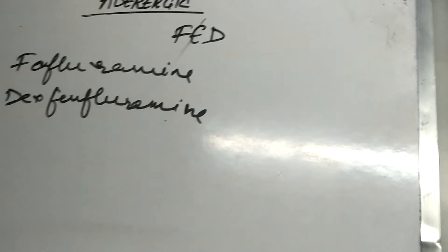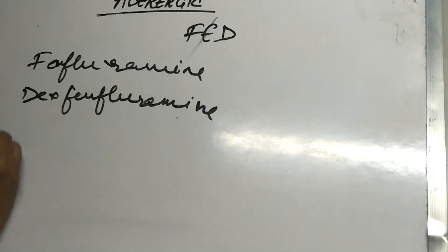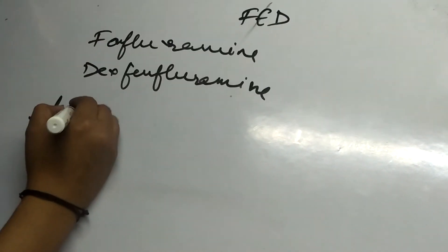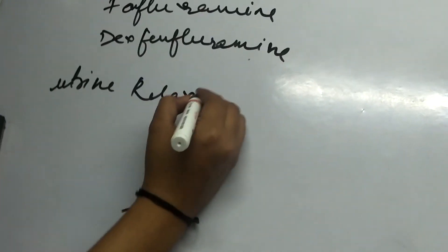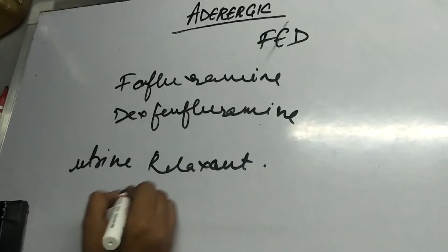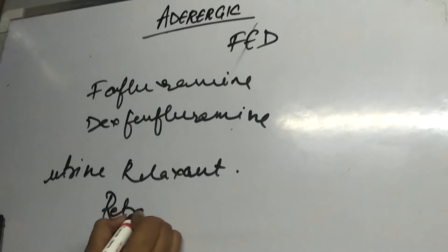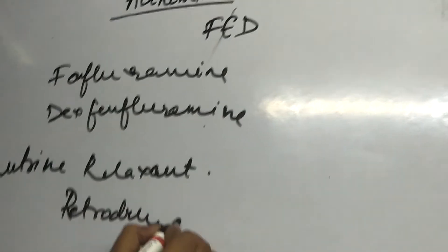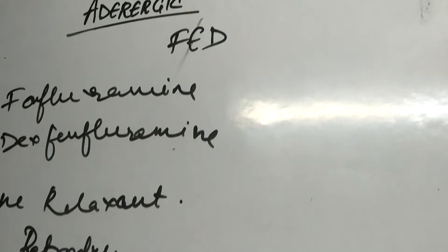Now the last one is uterine relaxants. It has one which is retrodrine, and the next one is salbutamol which we did in bronchodilators.